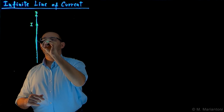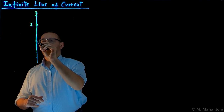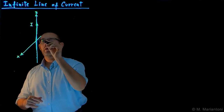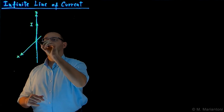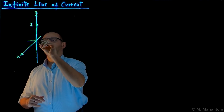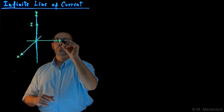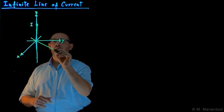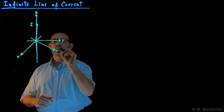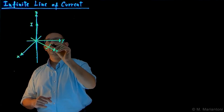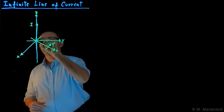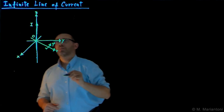We will also consider a Cartesian coordinate system x and y — not to use it, but just to give some three-dimensionality to the problem. This would be our R of the cylindrical coordinate system, and phi is defined in the usual fashion. This is the origin of the system.